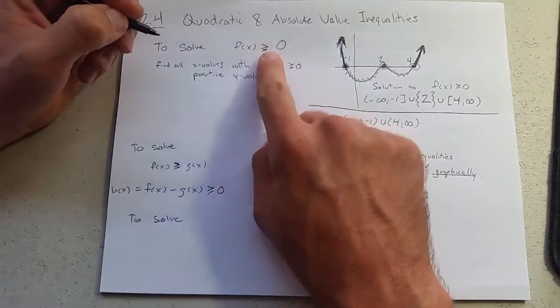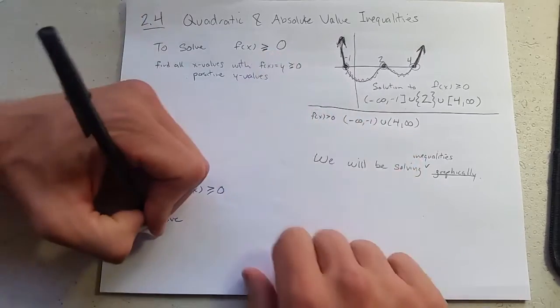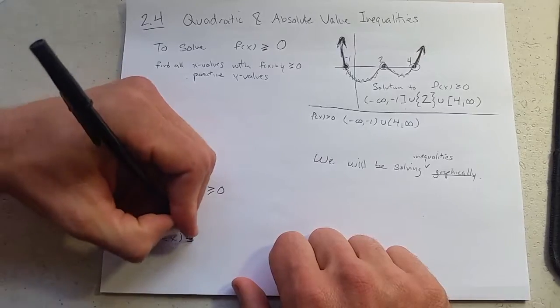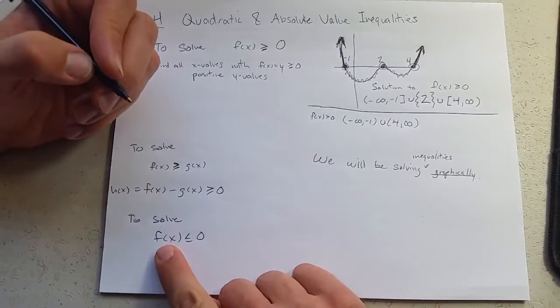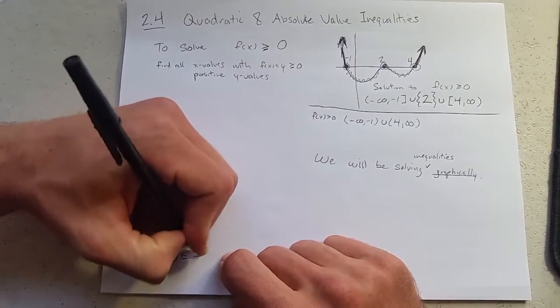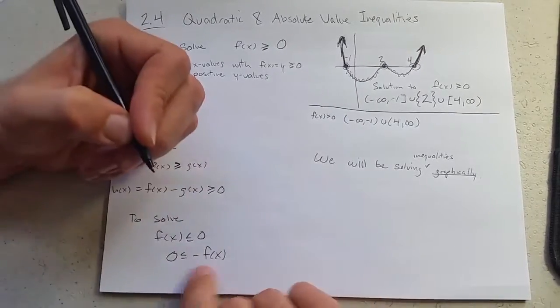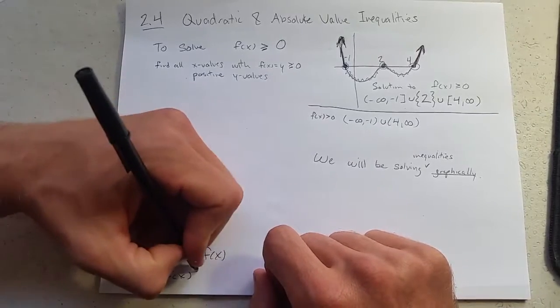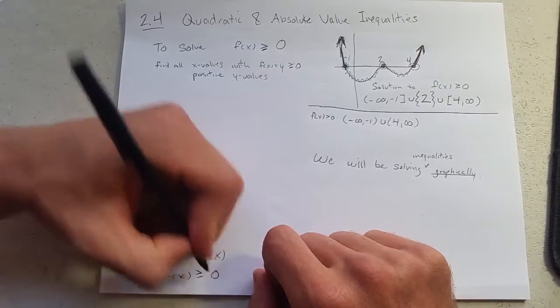So we talked about greater than or equal to or just regular greater than. What if you got the opposite sign? Well, I'm going to subtract f of x to the other side. Instead, you can always rotate inequalities around. Just make sure you flip the inequality sign.